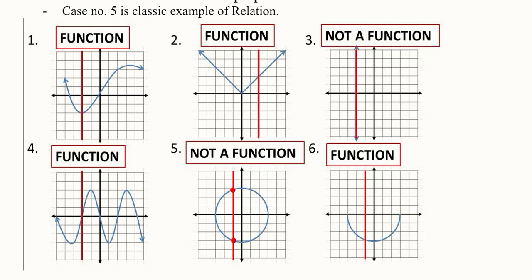There is another function that may seem complicated, but the intersection happens at only one point, so it is a function. Then we have a circle, which clearly intersects the vertical line at two points — meaning it is not a function, it is a relation. Finally, a curve or half-circle has an intersection at only one point, so it is again a function and not a relation.